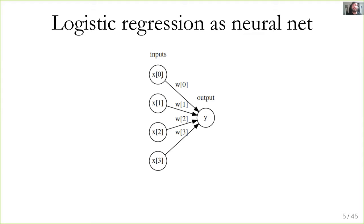Each circle corresponds to an input feature, each arrow corresponds to a weight, and the output circle is the prediction — each is just a single floating-point number. Don't confuse these with diagrams from latent Dirichlet allocation, where circles and arrows represented random variables. Here they represent single floating-point numbers. This is logistic regression drawn as a neural network.